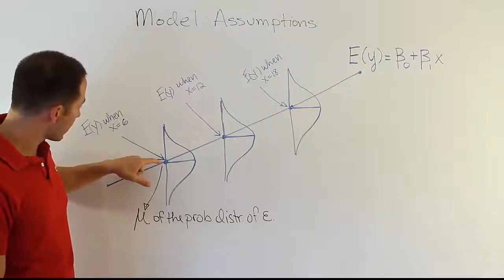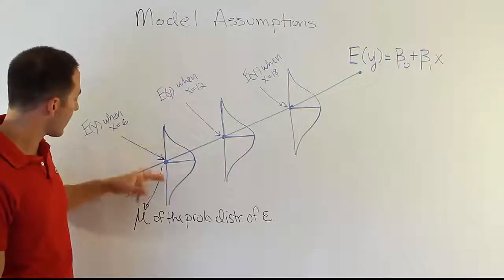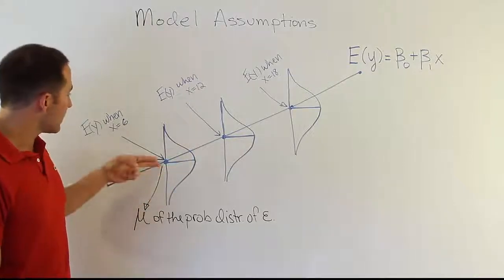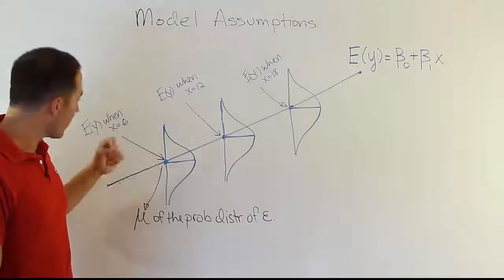So this is your predicted value, the number on the number line. And then you might have an observed value that's above or below that in some place. What this bell curve is representing is the distribution of those error terms.